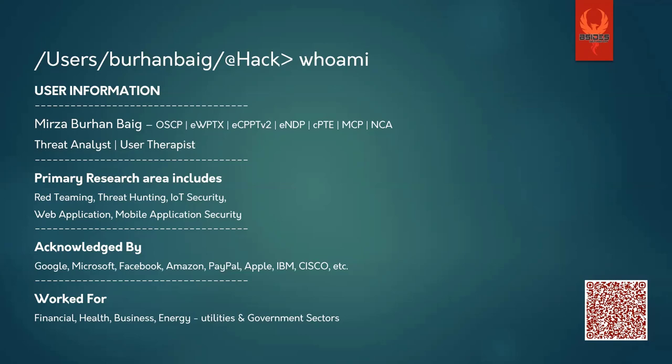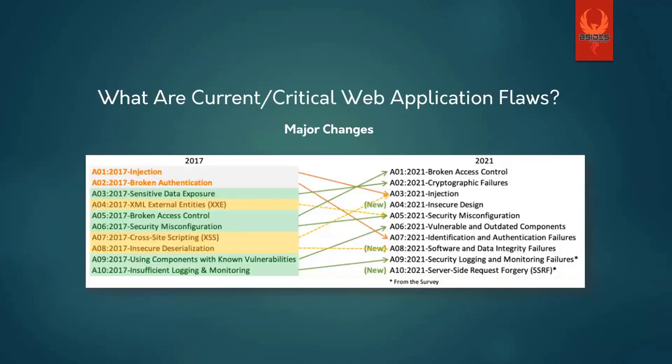So the question is: what are the current and critical web application flaws nowadays, and what are the major changes in the OWASP Top 10? Most of you have heard about OWASP Top 10 — it's a baseline for web application testers, providing a checklist for testing web applications.